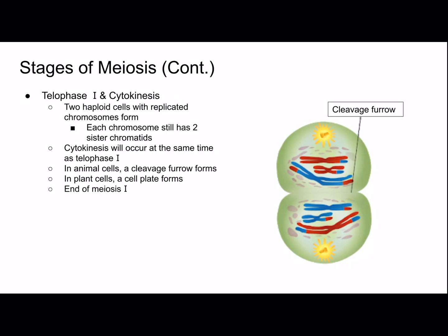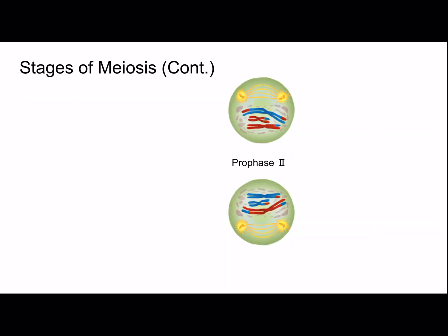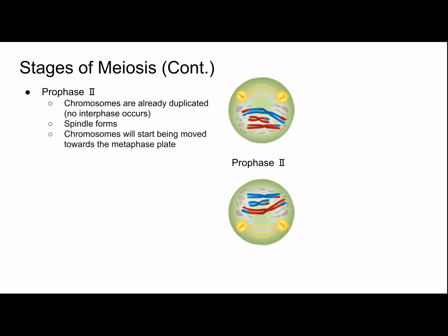Here are two cells in prophase II where chromosomes are already duplicated — that already happened in interphase before meiosis I. No interphase will occur between meiosis I and meiosis II, because we want to maintain the chromosome number in each cell. Again, the spindle will form and chromosomes will start being moved by the fibers toward the metaphase plate.